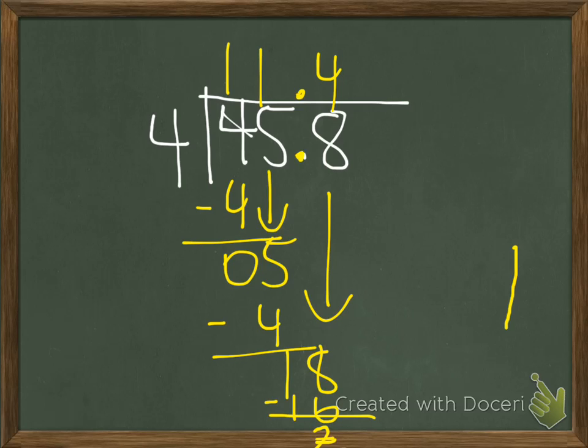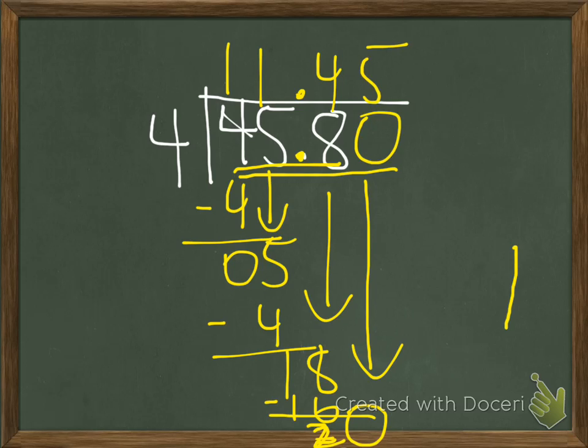Now, since the decimal is already here, all we would need to do is add a 0 to this answer, considering that 0 will not change the value of 45 and 8 tenths. 45 and 8 tenths and 45 and 80 hundredths is the exact same amount. Now that that 0 is there, however, I could bring that 0 down and I have 20 divided by 4. 20 hundredths now that are divided by 4, the 4 groups, the 4 hours. I would get 5. I multiply and I would have no remainder. Therefore, my answer would be 11 and 45 hundredths miles per hour.